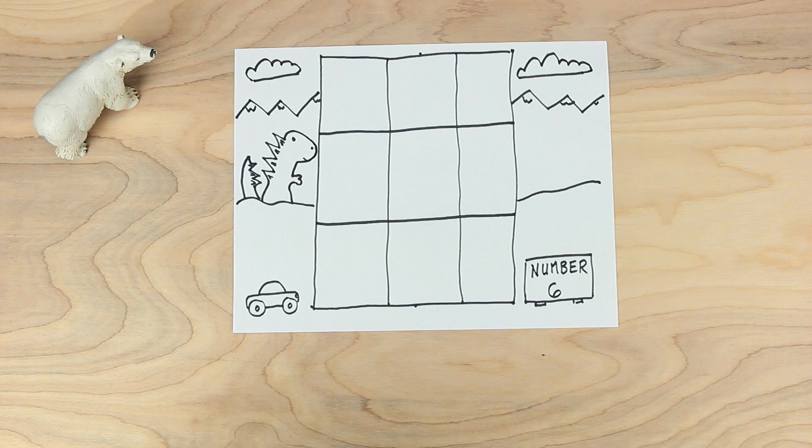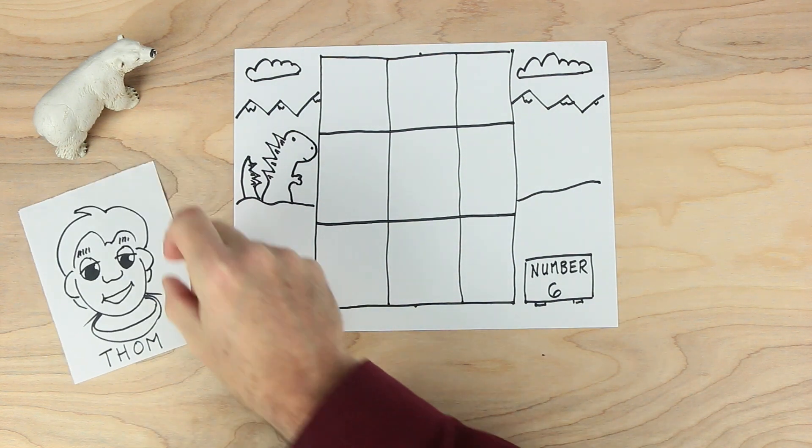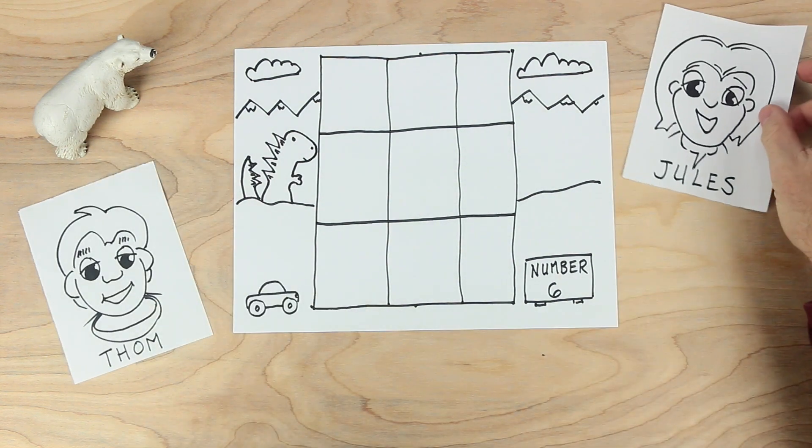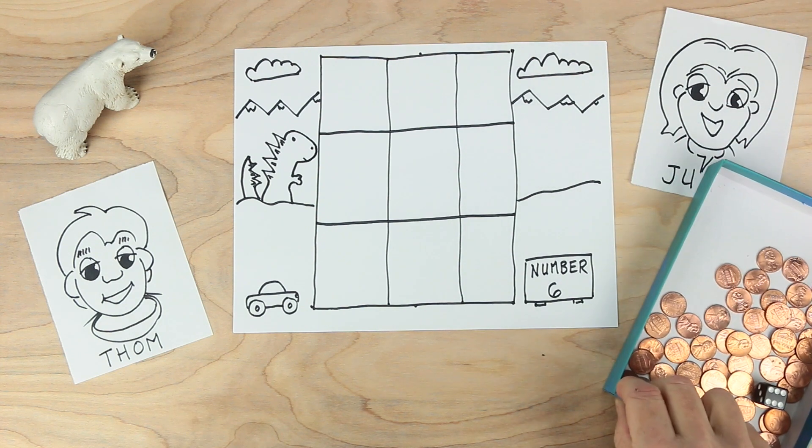Now we need some players. Today, Tom is playing. And so is Jules. And we need some playing pieces and our dice.